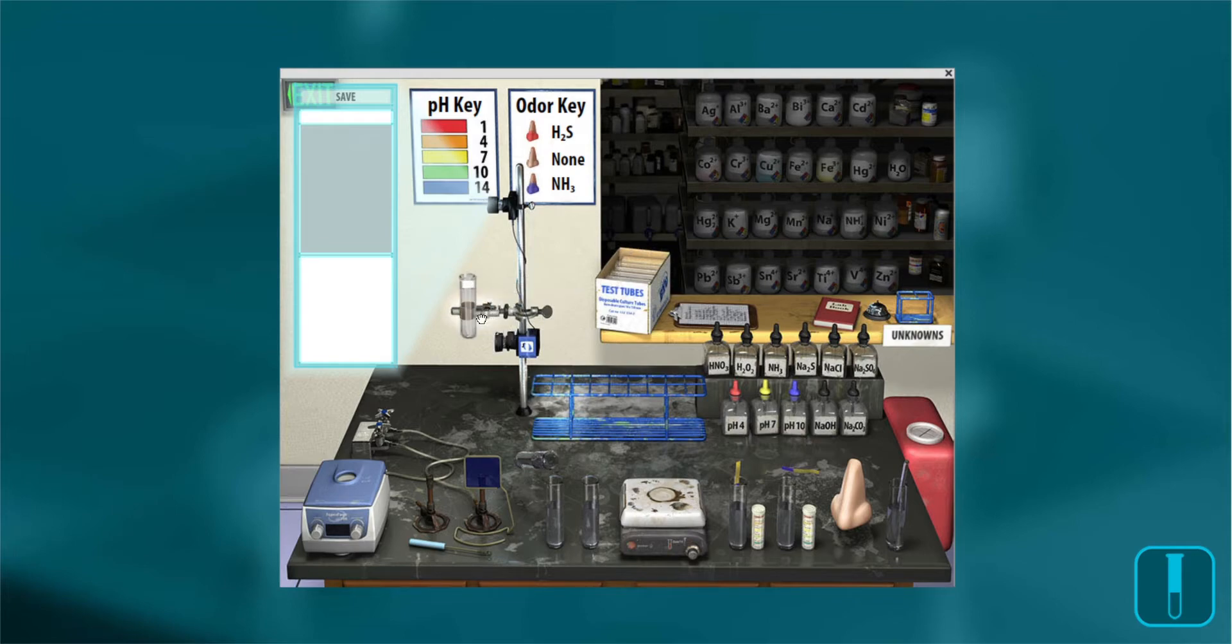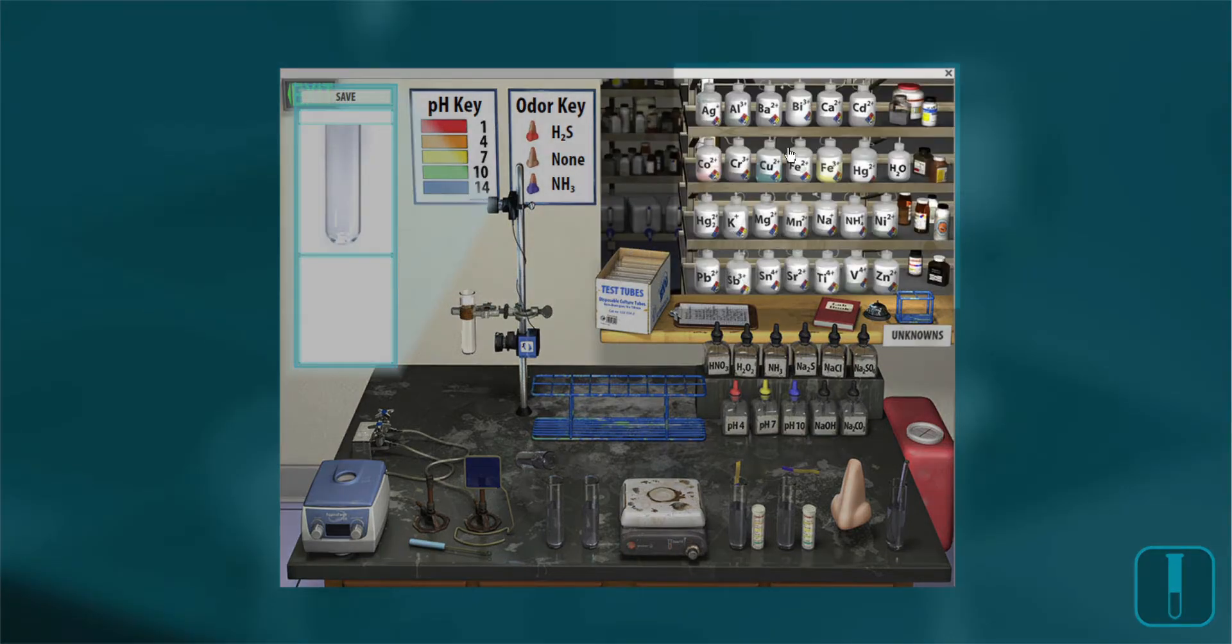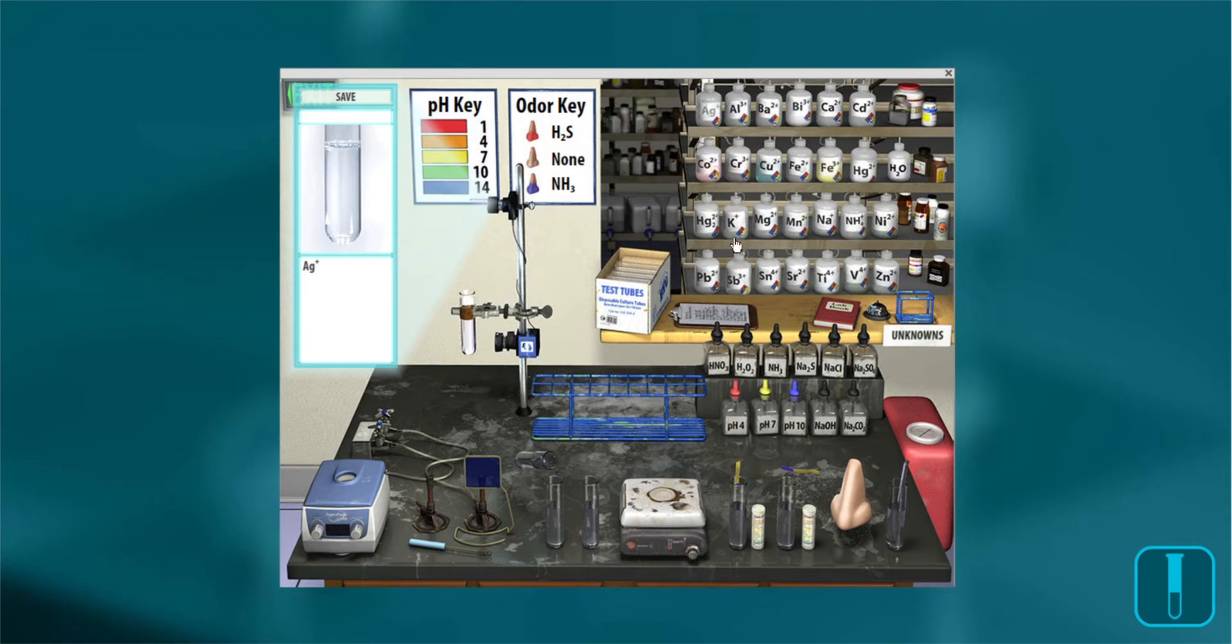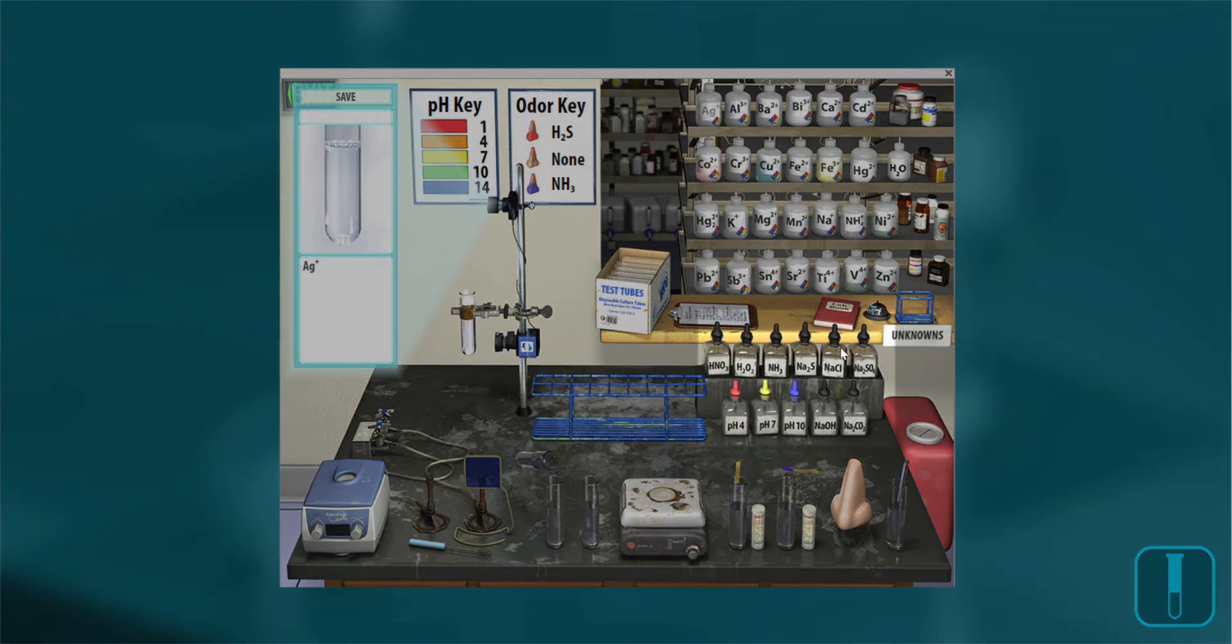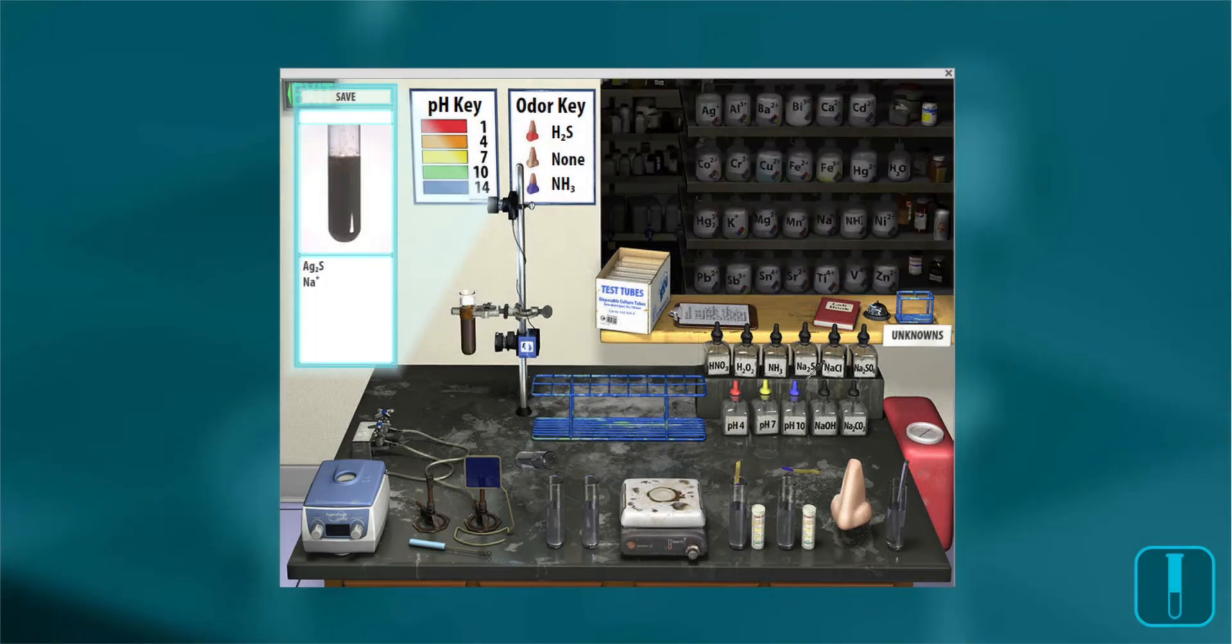Have your students select a test tube and add any cation you want them to learn to identify. For example, if I add silver, they can add any anion. If I add sulfide, we see from the characteristic color that a precipitate has formed and a reaction has occurred.